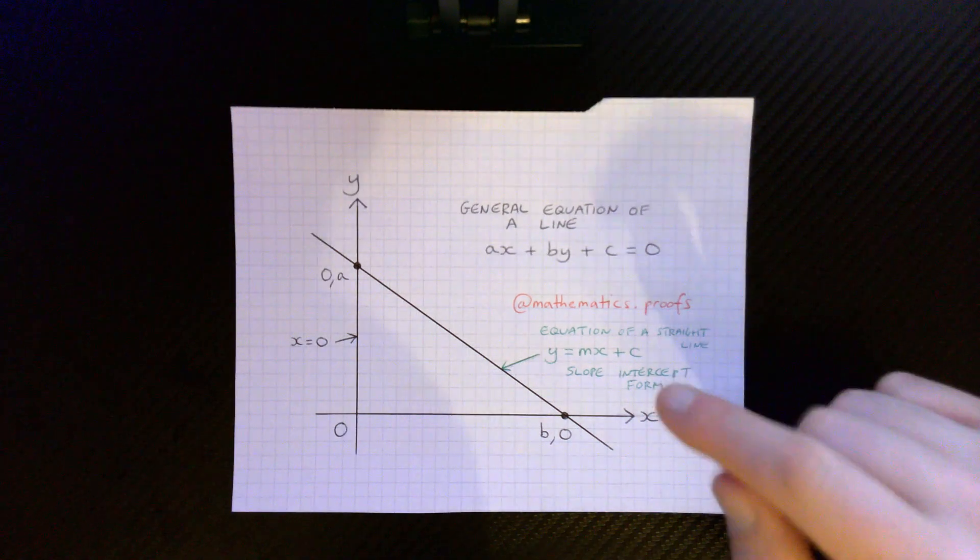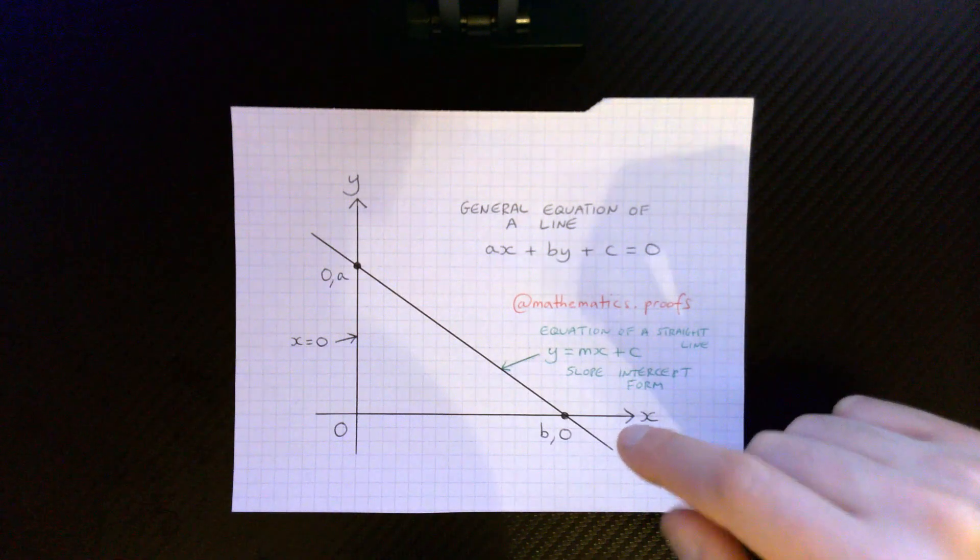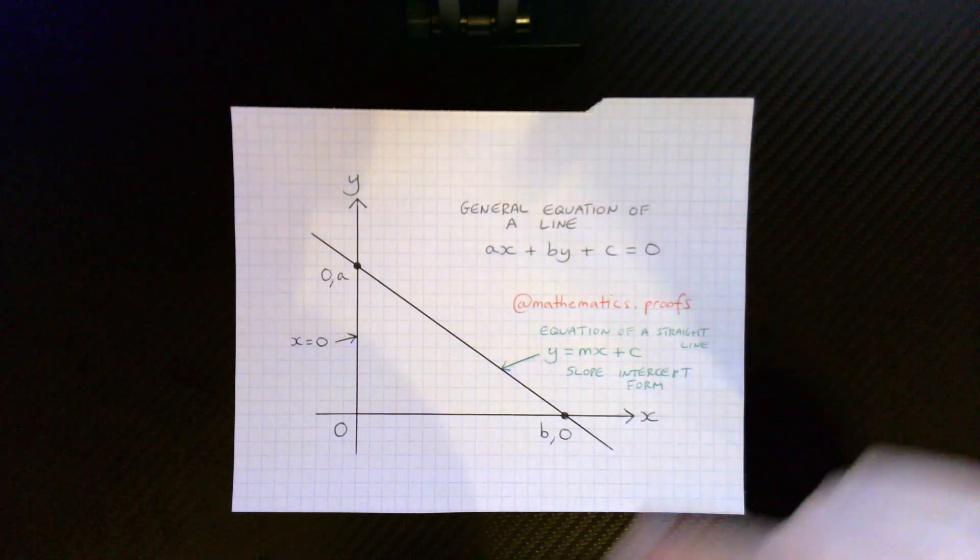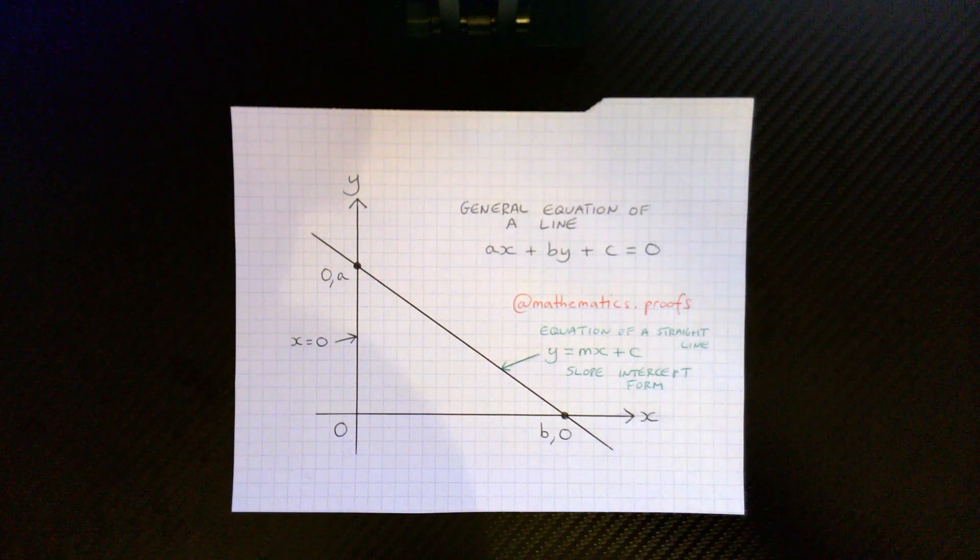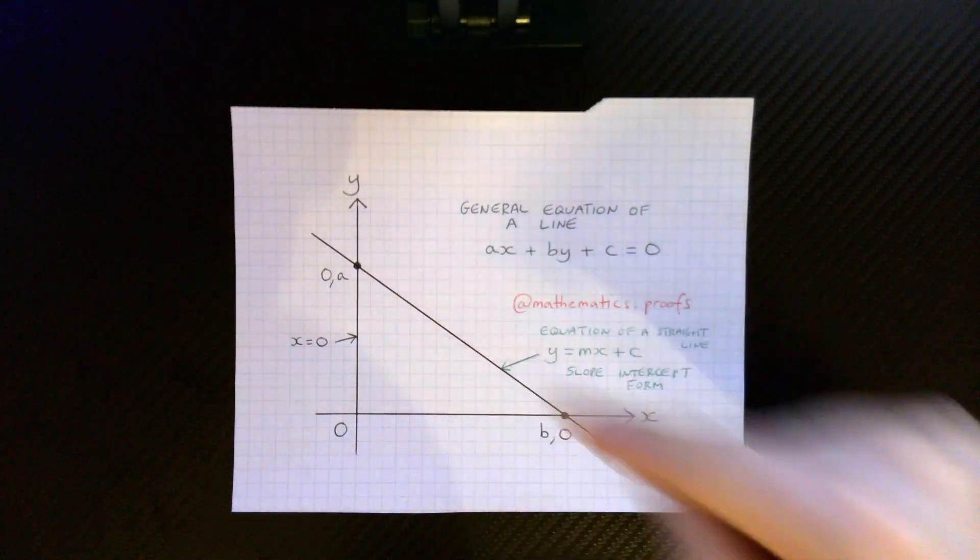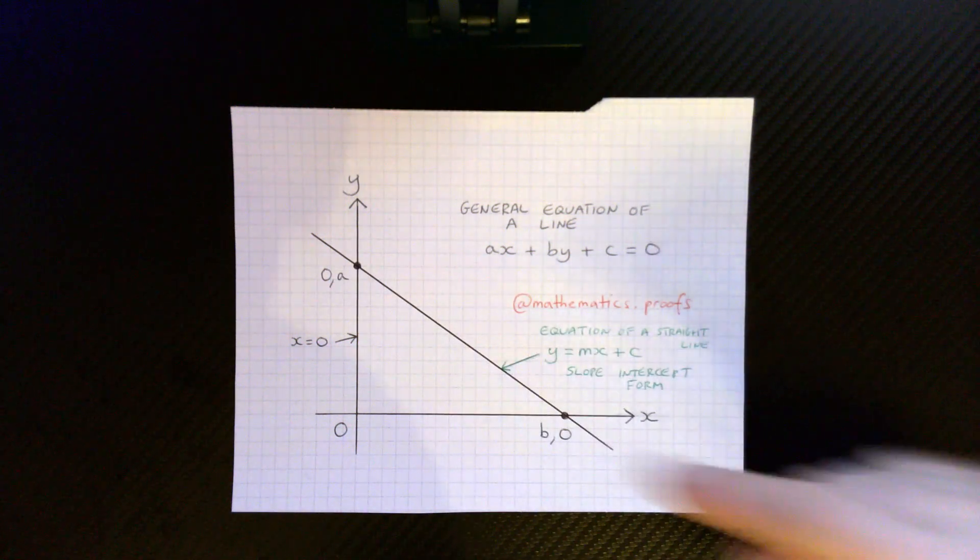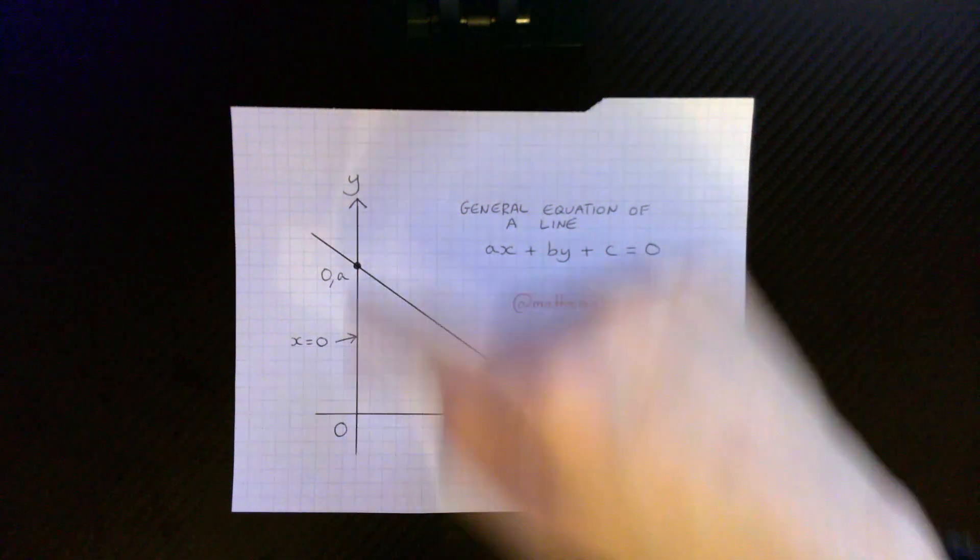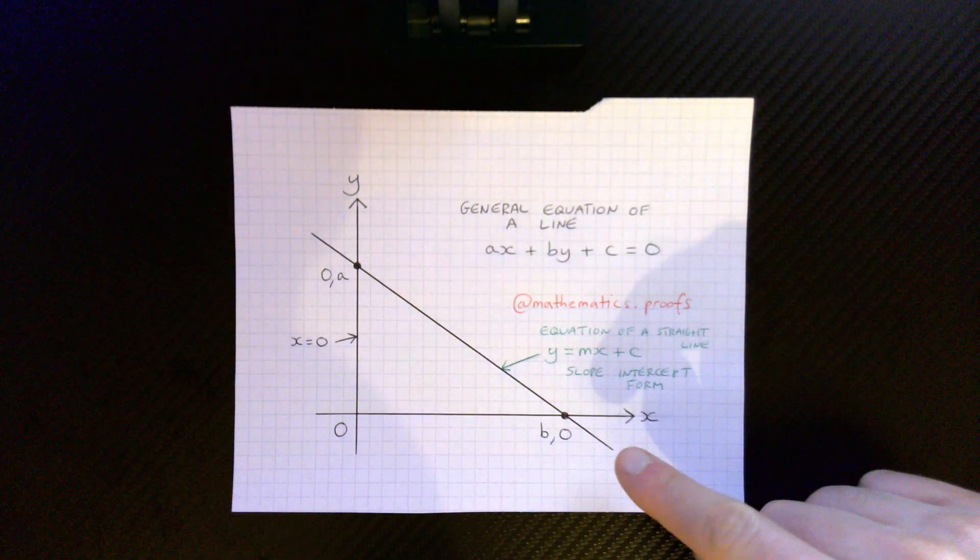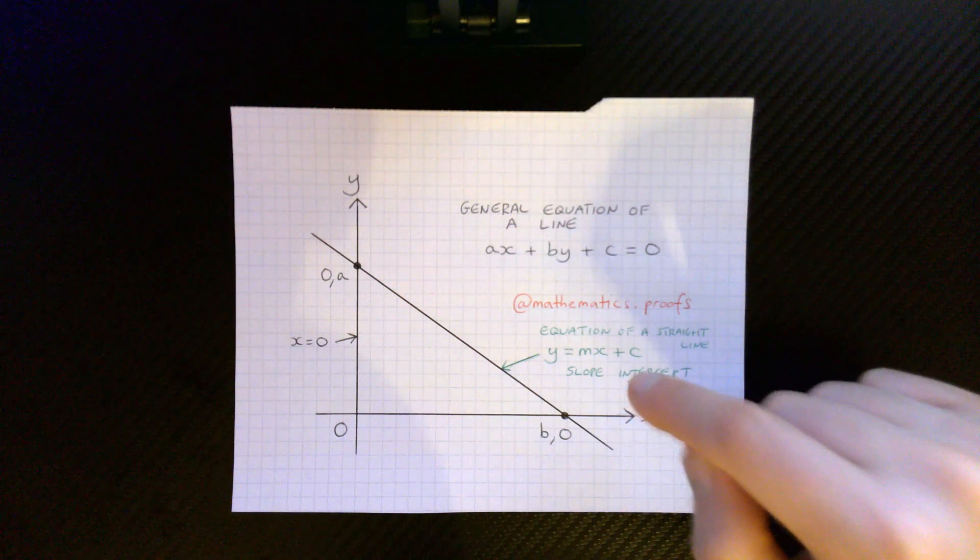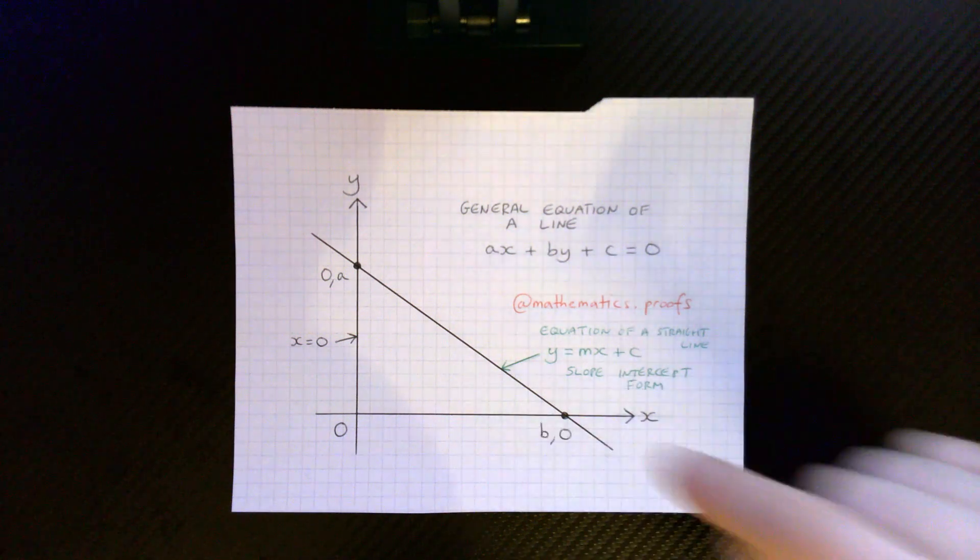Now what is the value m for this line over here? Well firstly m is rise over run. Secondly this line has a negative slope. The rise is a and the run is b. So m is going to be minus a over b.